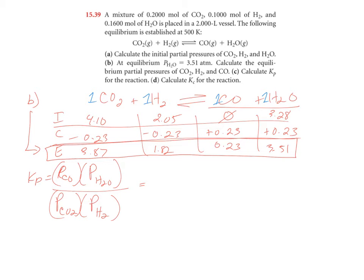Now we plug them in. So at equilibrium, 0.23 times 3.51 over 3.87 times 1.82. When we do this, we get 0.11 as our Kp. And this is letter C.